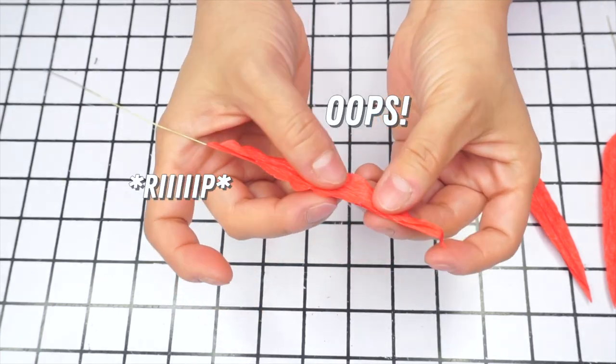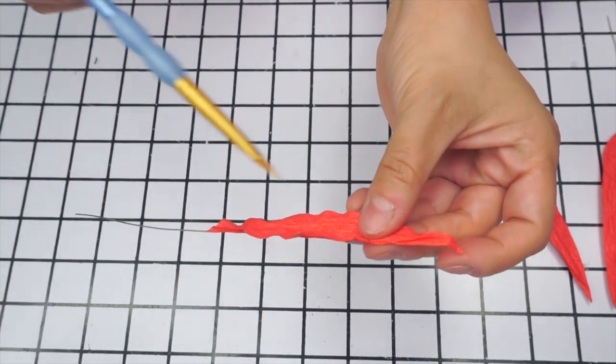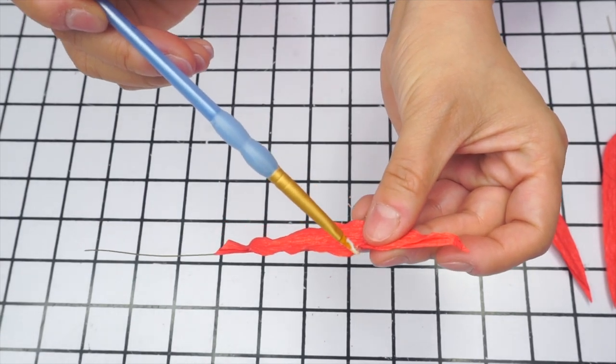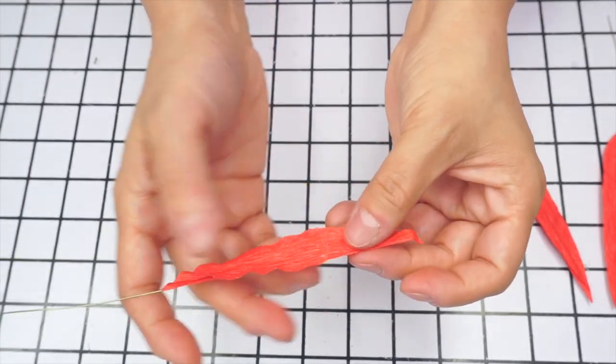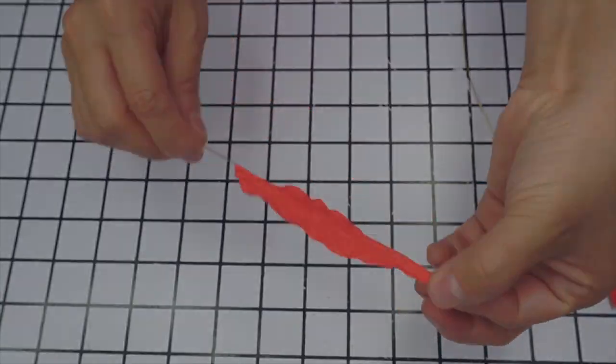In case your petal does rip, don't panic. You can glue the rip together with a little bit of Elmer's glue.